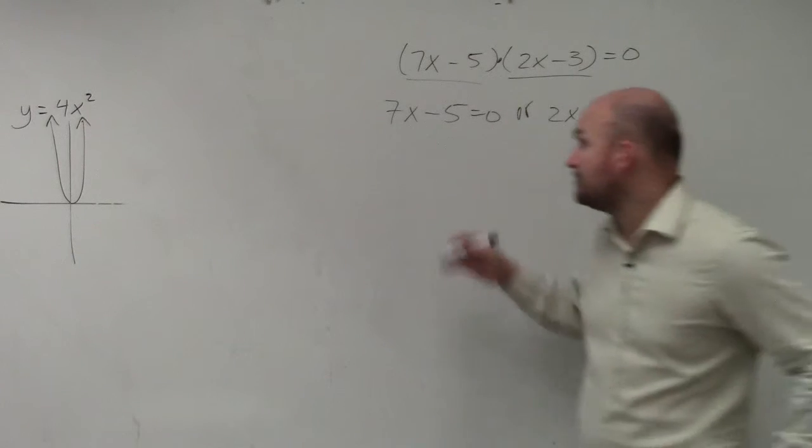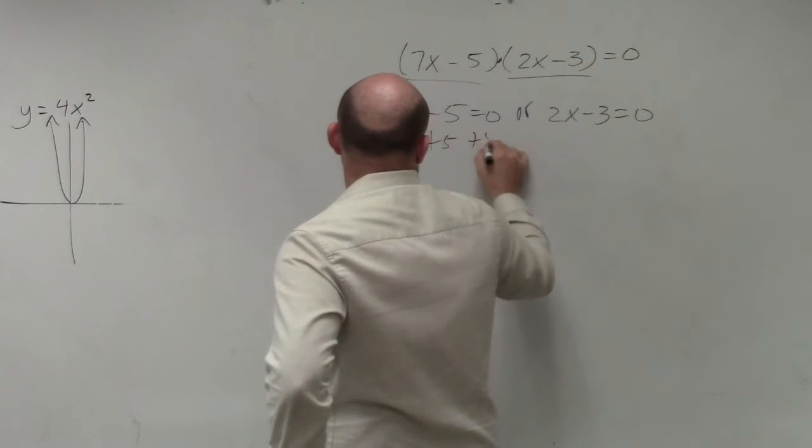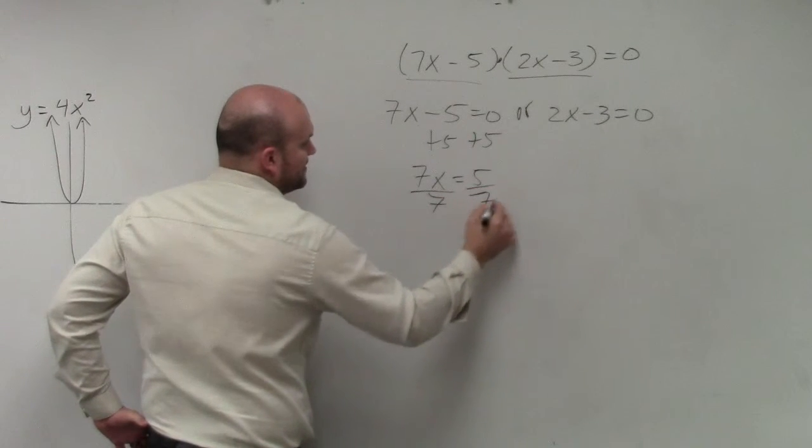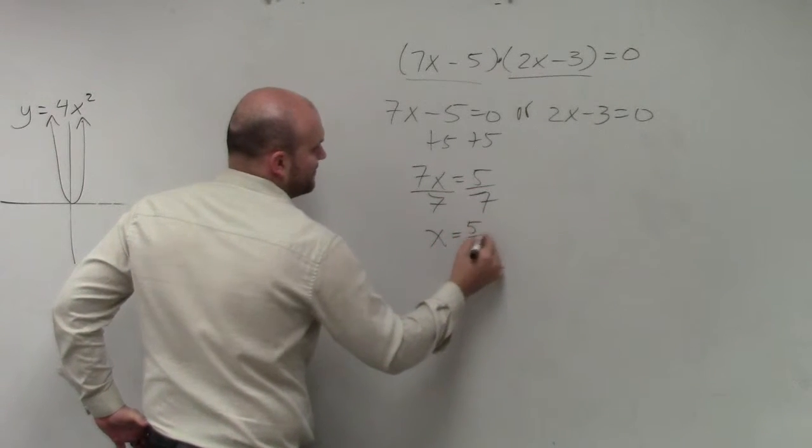Now you just solve using inverse properties. Add 5, add 5. 7x equals 5. Divide by 7, divide by 7. x equals 5 sevenths.